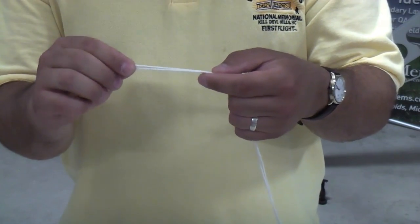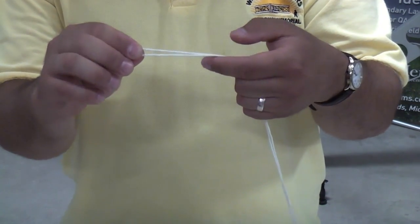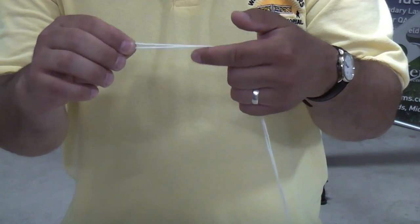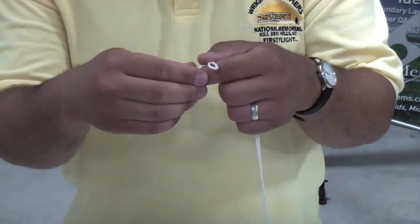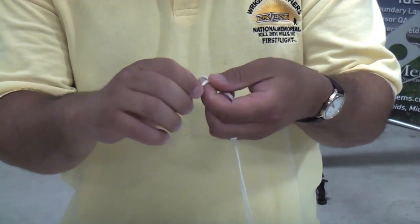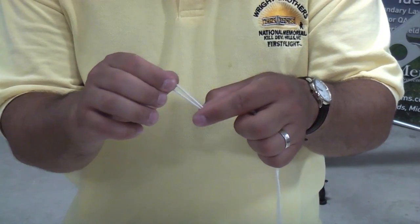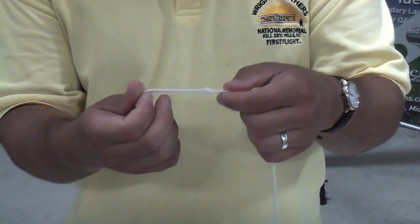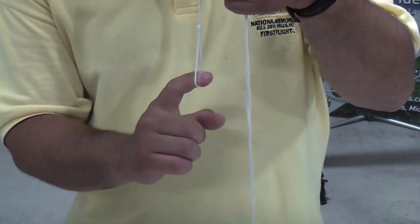Now I'm going to take the end of the string here, and I'm going to make a loop. The easiest way to do that is to just take the string, wrap it around my finger, and then push the loop through. Pull tight. What this does for us is create a holding point that we could use later on.